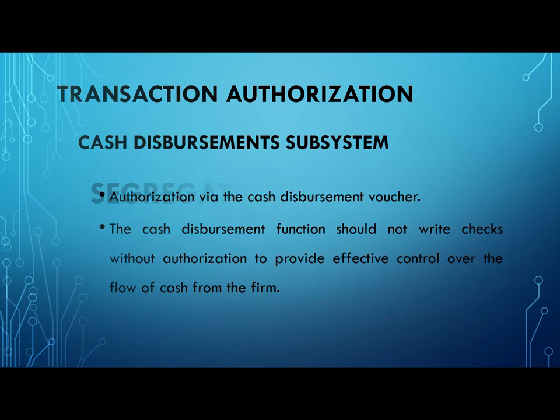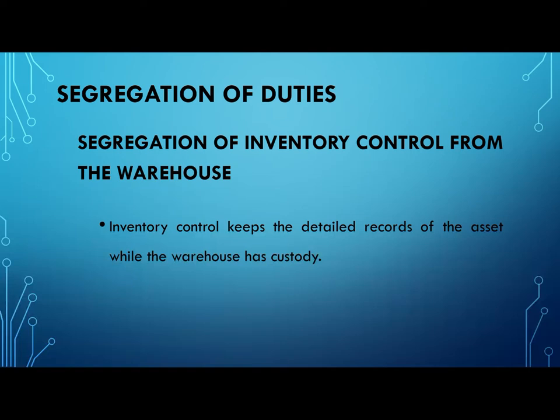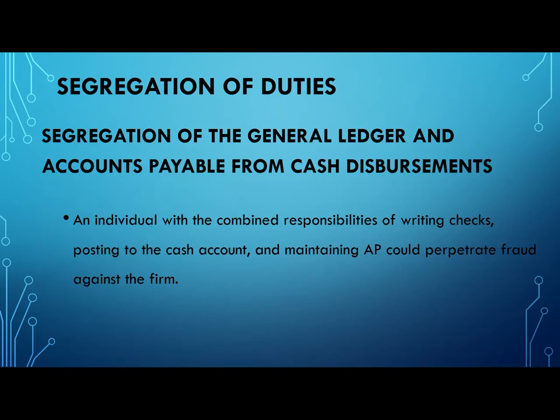The second control is segregation of duties. Segregating inventory control from the warehouse gives the firm a more concise and accurate record of the assets being released and kept. Segregating the general ledger and accounts payable from cash disbursements helps avoid exposure to fraud against the firm.